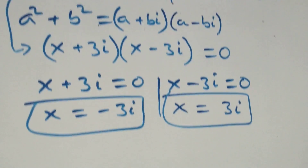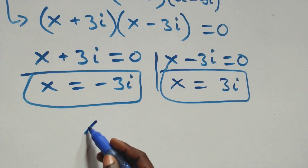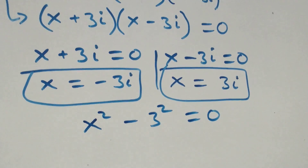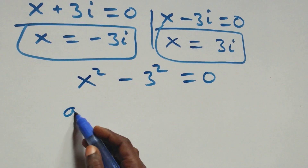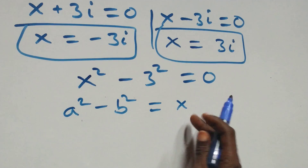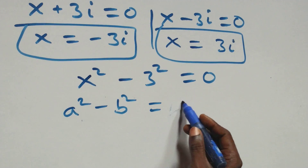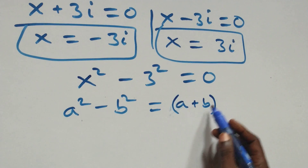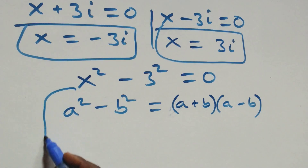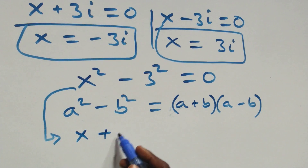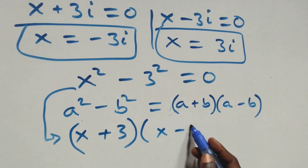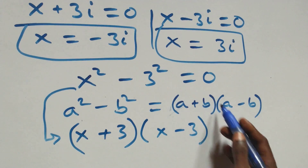Solving from the second case: x squared minus three squared equals zero. This also follows from the difference of two squares — a squared minus b squared equals (a + b)(a − b) — so we get (x + 3)(x − 3) equals zero.